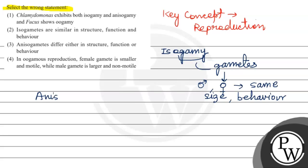Whereas, what is anisogamy? In anisogamy, we get a few differences in male and female gametes.